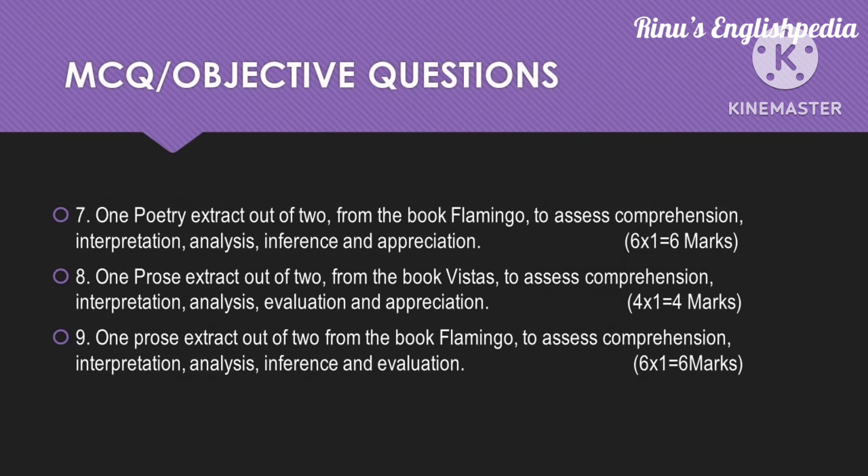The next three questions — question number seven, eight, and nine — are going to be based on extracts. Question number seven will be a poetry extract from the book Flamingo. Two extracts will be given and you have to attempt any one. They will assess your comprehension, interpretation, analysis, inference, and critical appreciation. The weightage will be six marks — six questions of one mark each.